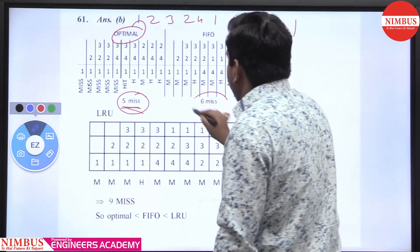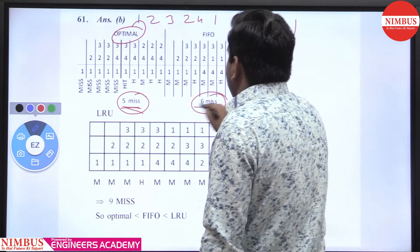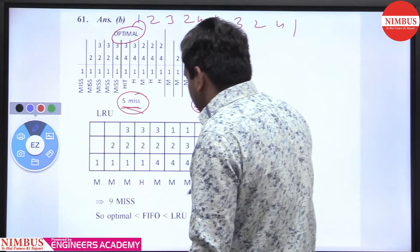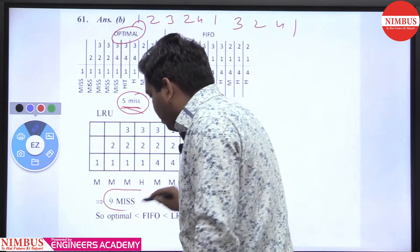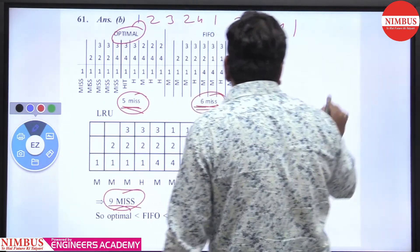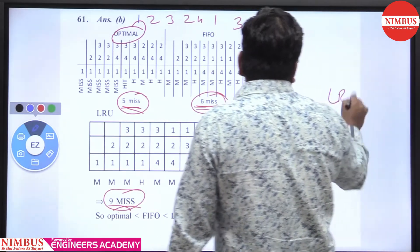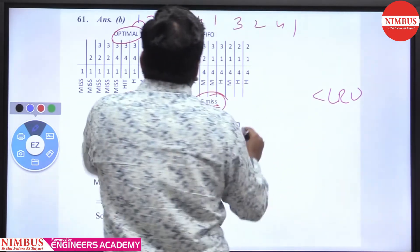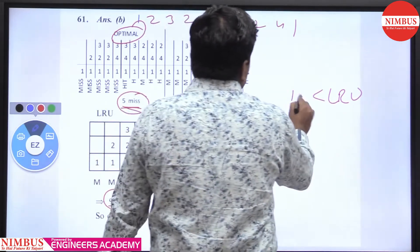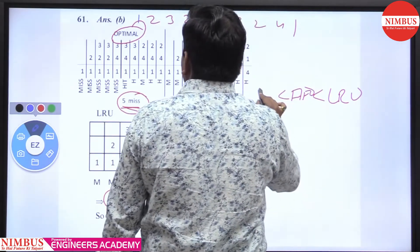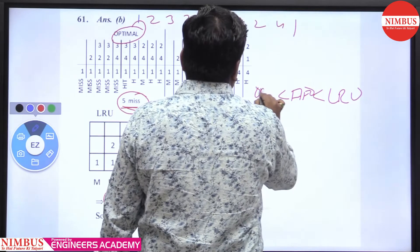When you apply FIFO, there are 6 page faults. And when you apply LRU, you get 9 page faults. So LRU has the highest page fault count, followed by FIFO, and then Optimal.